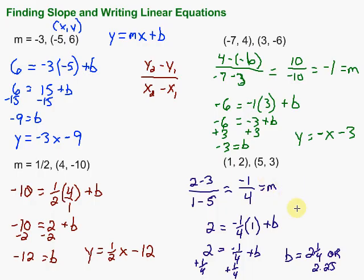Now I'm just going to go ahead and write my equation. So fill in my m and my b. So y equals m, which we found to be negative 1 fourth, x, and then plus 2 and 1 fourth. So there's my equation for a line that passes through the points 1, 2, and 5, 3.